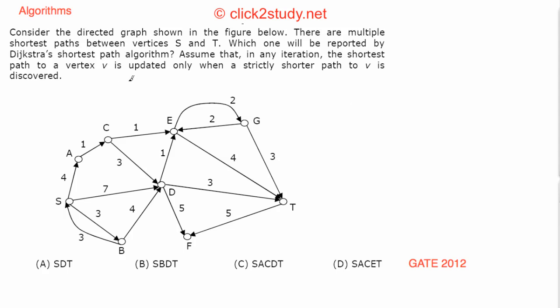Consider the directed graph shown in the figure. There are multiple shortest paths between vertices S and T. Which one will be reported by Dijkstra's shortest path algorithm? Assume that in any iteration, the shortest path to a vertex V is updated only when a strictly shorter path to V is discovered. We need to implement Dijkstra's algorithm on this graph and find the shortest path between S and T.